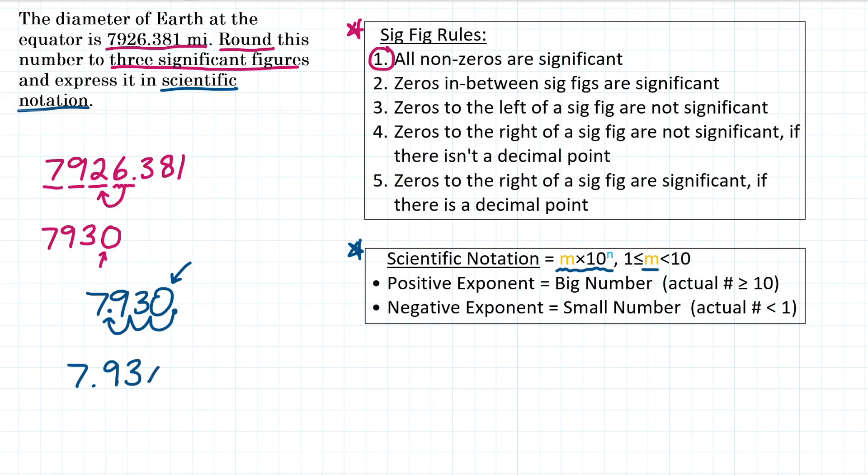And then the second part of our scientific notation, we have times 10 to some power. And that power correlates to how we moved our decimal point. So the value of our power is how many places we moved the decimal. Well, we moved it one, two, three places. So that means our power of 10 is going to be 3.